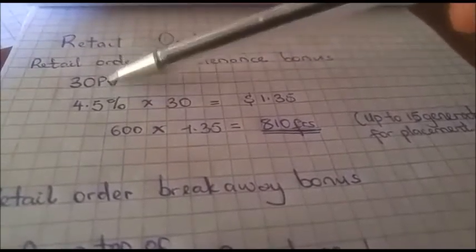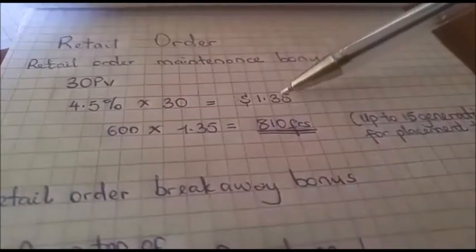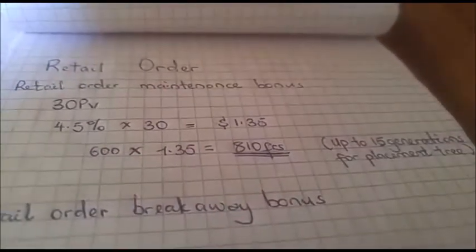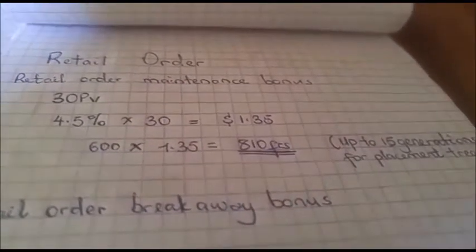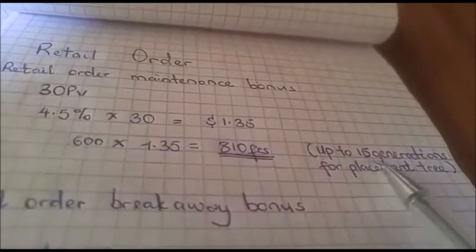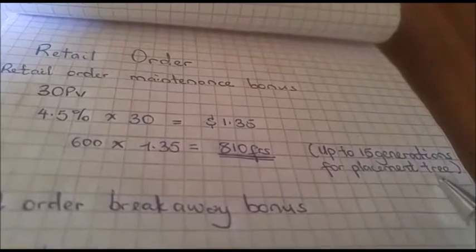Let's look at the situation whereby you do your maintenance bonus of just 30 PV. What happens? The company pays you back 4.5% of that 30 PV, which is 1.35 dollars, and the CFA is 810 francs. And do you know what is exciting about this particular one? The company pays you up to the 15th generation for your placement tree.